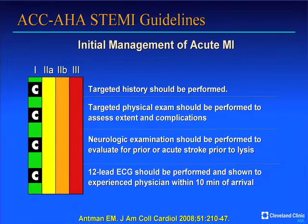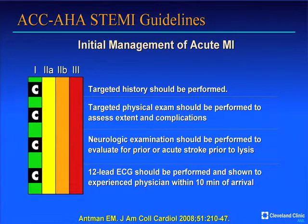The targeted history focuses on symptoms which may represent other causes of chest discomfort or important comorbidities that may contraindicate antithrombotic or fibrinolytic therapy. A targeted physical exam determines if patients are having a stroke, are in heart failure, or have evidence of aortic dissection. Neurologic exam is also important, as strokes can accompany myocardial infarction, either as the triggering event or as a result of embolization. The 12-lead ECG makes the diagnosis of ST elevation MI and should be performed and interpreted within 10 minutes of arrival — a quality indicator.